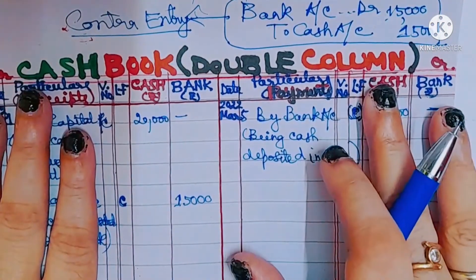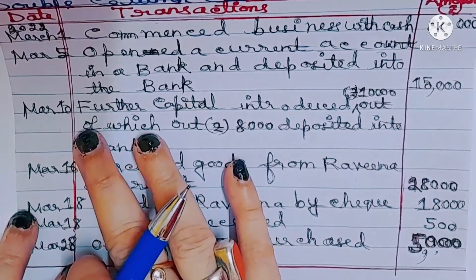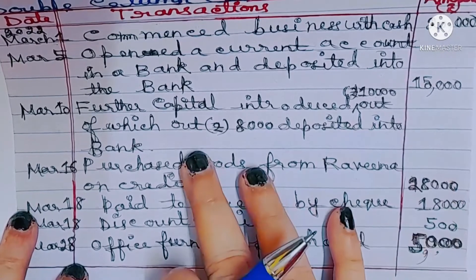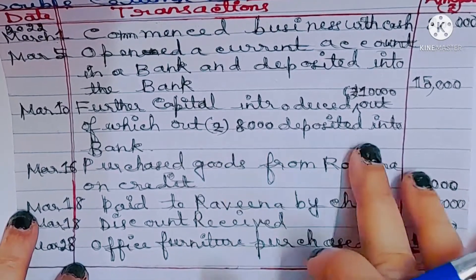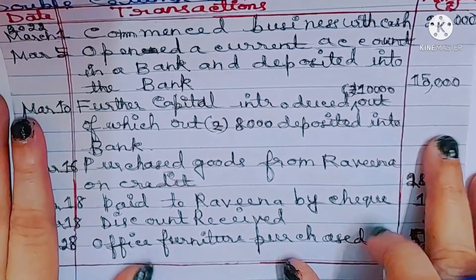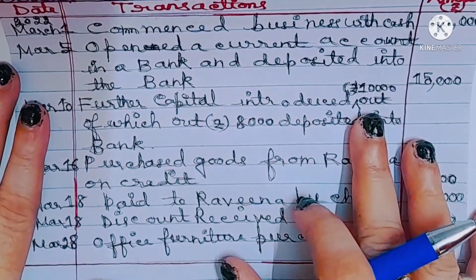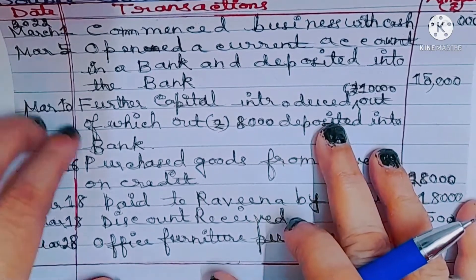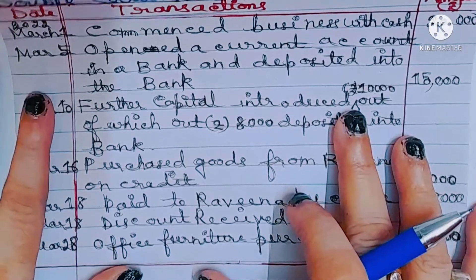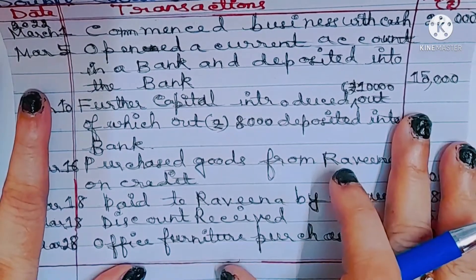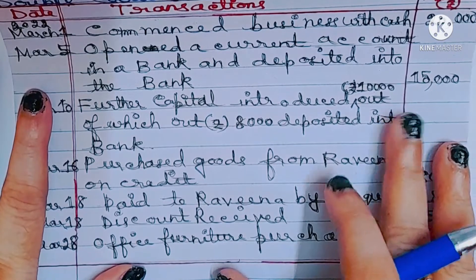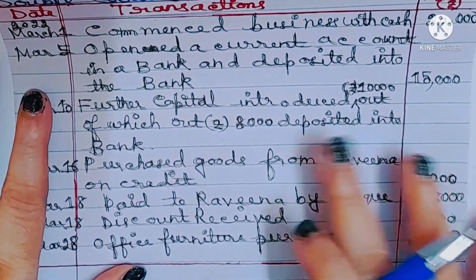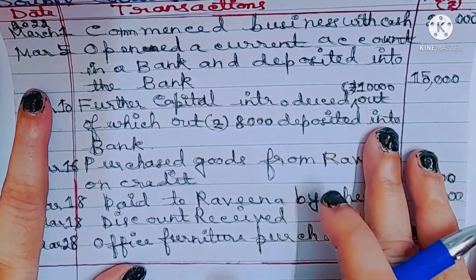The next transaction is on 10th March: further capital introduced 10,000, out of which 8,000 is deposited into the bank and 2,000 is retained as cash. The journal entry: cash account debit 2,000 and bank account debit 8,000, to capital account 10,000. (10,000 minus 8,000 = 2,000 in cash; 2,000 plus 8,000 = 10,000.)